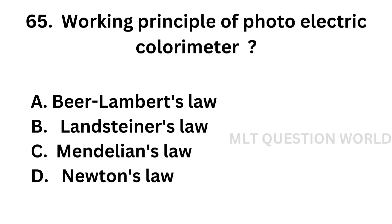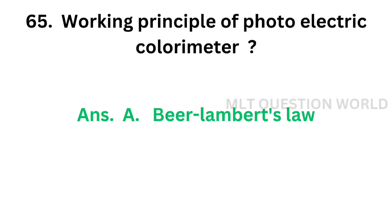Question number 65: Working principle of photoelectric colorimeter — Option A: Beer-Lambert's law, Option B: Landsteiner's law, Option C: Mendelian's law, Option D: Newton's law. The correct answer is Beer-Lambert's law. Photoelectric colorimeter is based on Beer-Lambert's law.